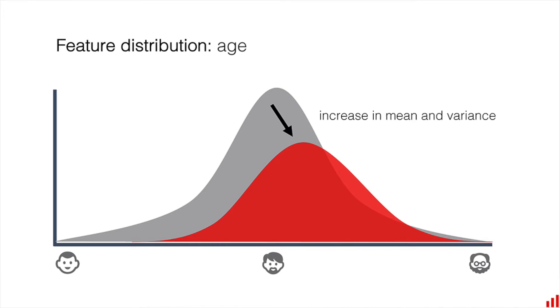Similar things might happen when you see your user demographic change, or when you apply your model in a different geographic location. If you're working in other domains, say manufacturing, you can see things like a change in supplier of raw materials and their chemical composition. In the end the result is the same — the model might not perform as well in this new feature space.